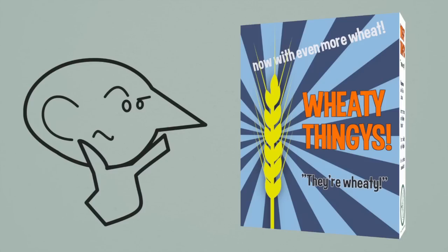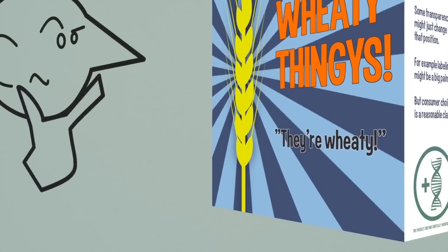Many consumers view GM with suspicion. Some transparency might just change that position. For example, labelling might be a big pain, but consumer choice is a reasonable claim.